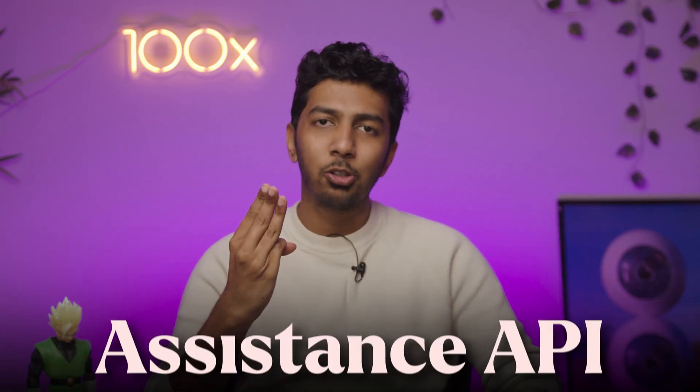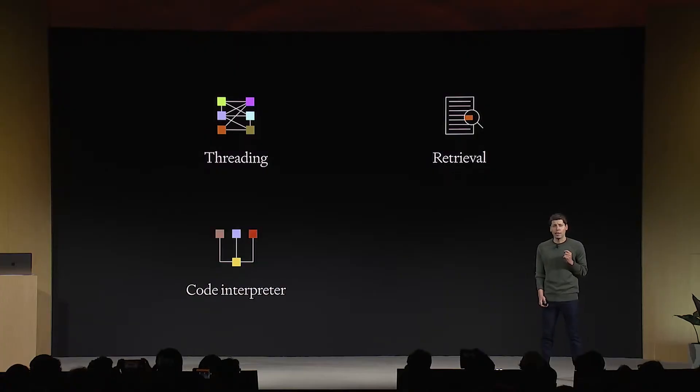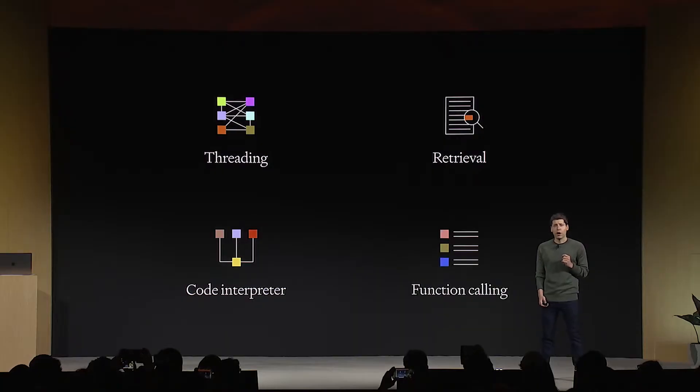The third major announcement is the Assistants API. Think of the Assistants API as GPTs, but instead of doing it directly via the ChatGPT native interface, you can do it via the API — making it obviously much more relevant for developers. A few key things to notice here are threads: ChatGPT can now have memories, going back and analyzing past threads to get context from previous conversations. The next feature is retrieval — an extension of memory — where it can reference things said a day or two earlier. Finally, there is code interpreter and function calling.